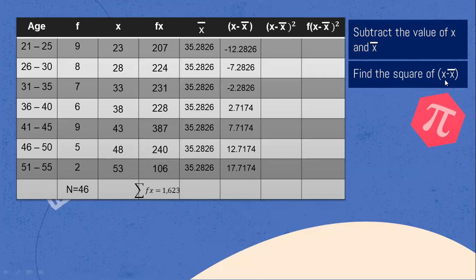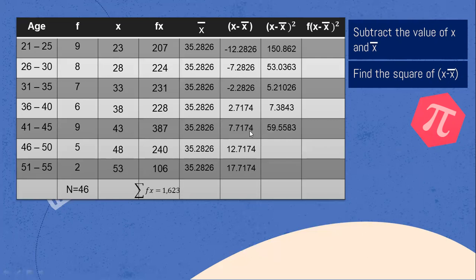Next step: find the square of the quantity of the midpoint minus the mean. We multiply each deviation value by itself. Negative 12.2826 times negative 12.2826 equals 150.862. Negative 7.2826 times negative 7.2826 equals 53.0363. Negative 2.2826 times negative 2.2826 equals 5.2102. 2.7174 times 2.7174 equals 7.3843. 7.7174 times 7.7174 equals 59.5583. 12.7174 times 12.7174 equals 161.723. 17.7174 times 17.7174 equals 313.963.